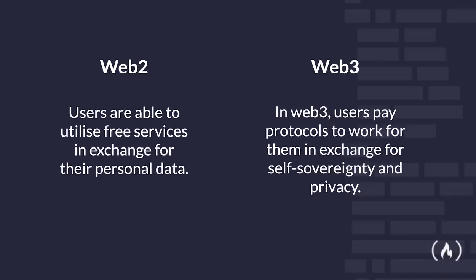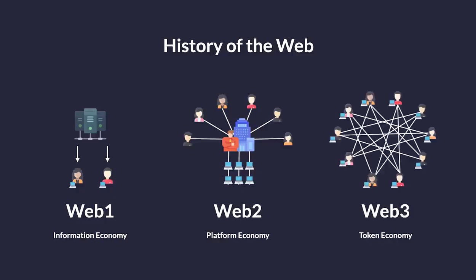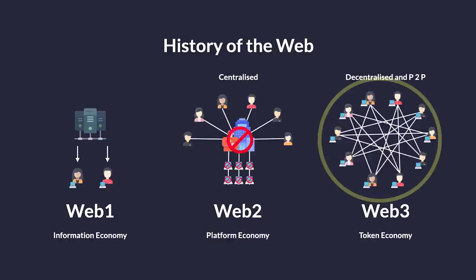In Web2, users are able to utilize free services in exchange for their personal data. And in Web3, users pay protocols to work for them in exchange for self sovereignty and privacy. In other words, Web3 is decentralized. This meant that whatever we built on Web3 is less reliant on centralized companies whose servers may go down, and more reliant on a distributed network of lots of individuals. Two great examples of decentralized networks are the Ethereum network and IPFS, the Interplanetary File System network.